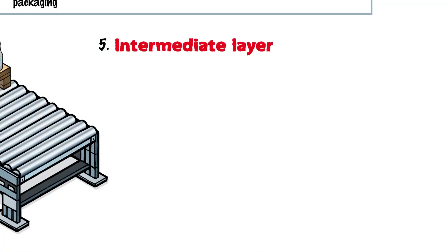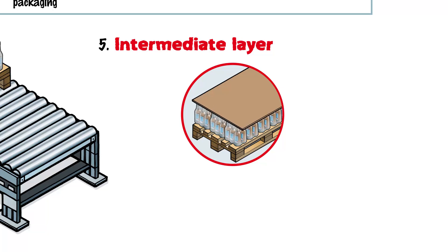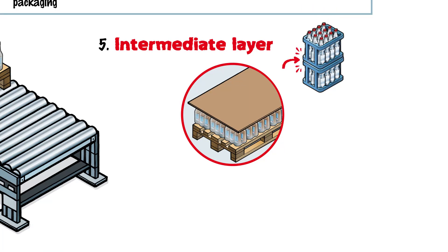Once a complete layer has been formed on the pallet, it may be necessary to add an intermediate layer, depending on the product. This improves stability and provides greater protection during transportation. No intermediate layers are required for drink crates, as these are locked in place by the crate underneath, but they are needed for film-wrapped six-packs.